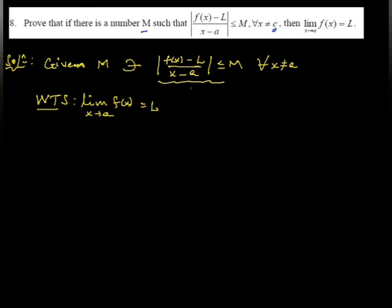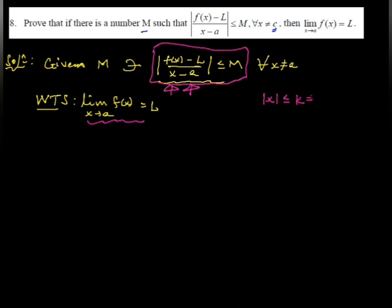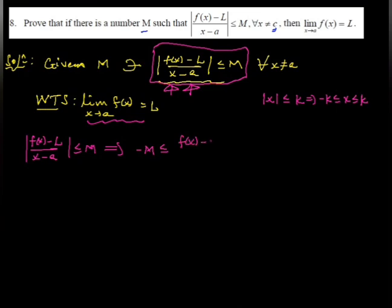We start from the given information and take the inequality. Since the absolute value of F(x) minus L over x minus A is less than or equal to M, this implies: −M ≤ (F(x) − L)/(x − A) ≤ M.